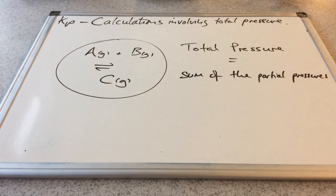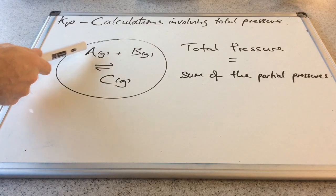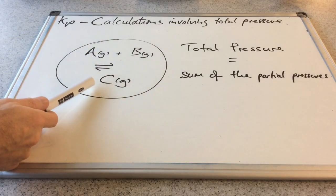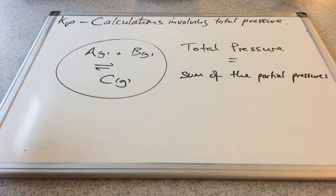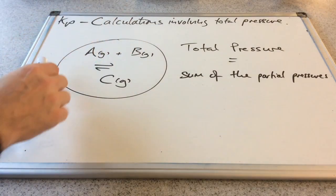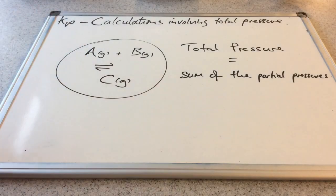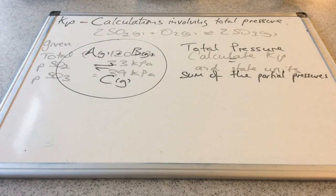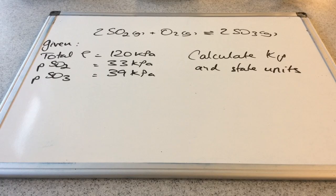So very simply, if we've got an equilibrium system where we've got A and B in equilibrium with C, all gases, all exerting their partial pressure, the total pressure, so the pressure of this whole system, will be the sum of the partial pressures. So we'll go straight into a calculation on this.